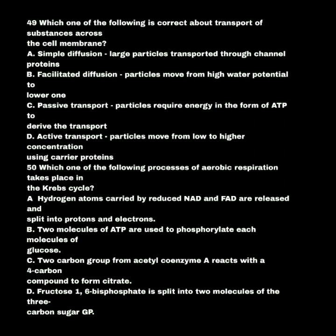Which one of the following processes of aerobic respiration takes place in the Krebs cycle? A. Hydrogen atoms carried by reduced NAD and FAD are released and split into protons and electrons. B. Two molecules of ATP are used to phosphorylate each molecule of glucose. C. Two carbon groups from acetyl coenzyme A react with four carbon compounds to form citrate. D. Fructose 1,6-biphosphate is split into two molecules of three-carbon sugars. The answer is C.